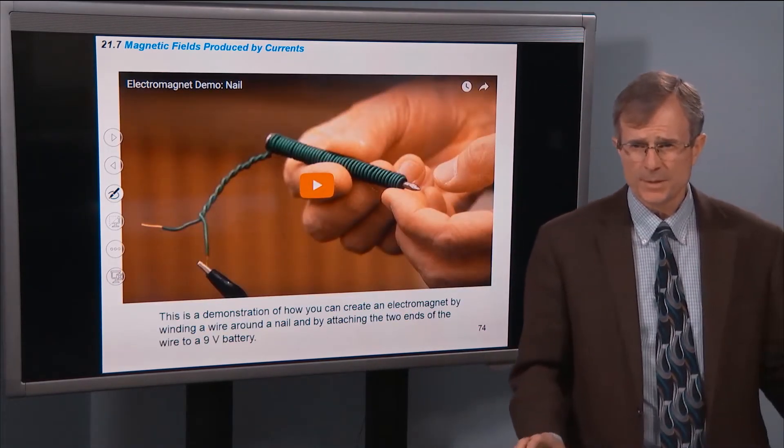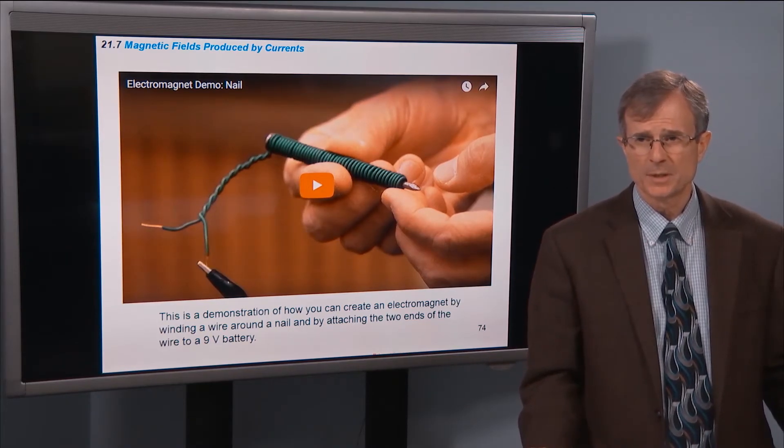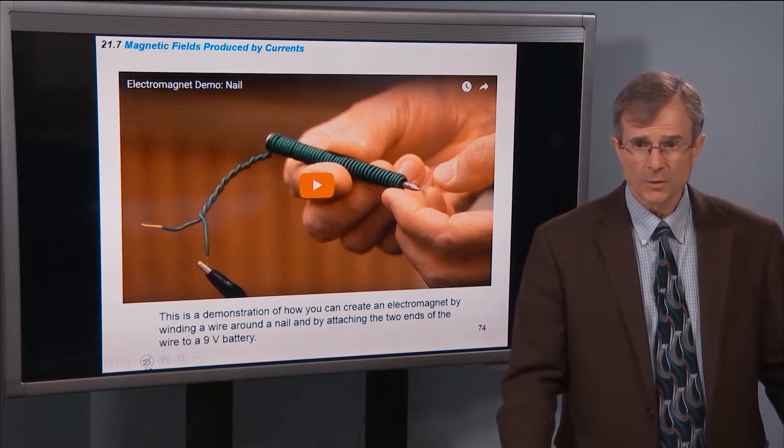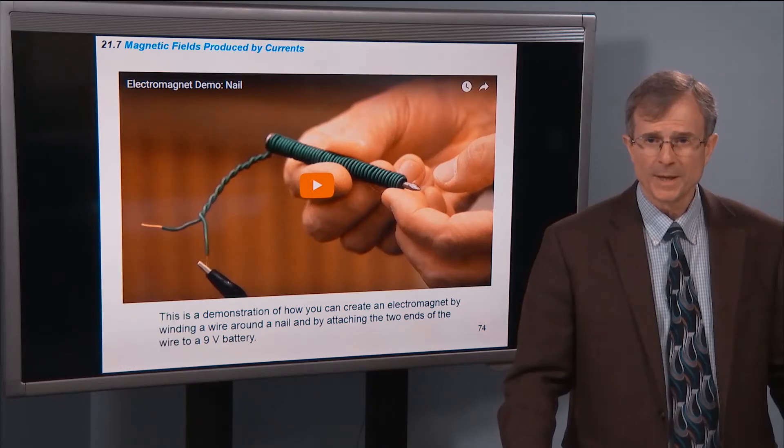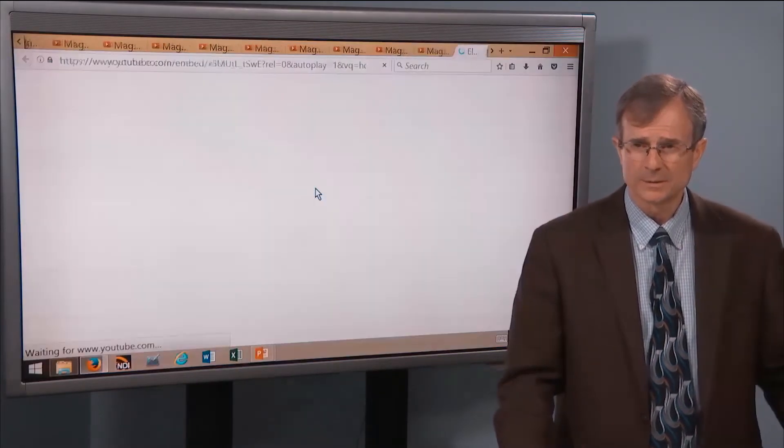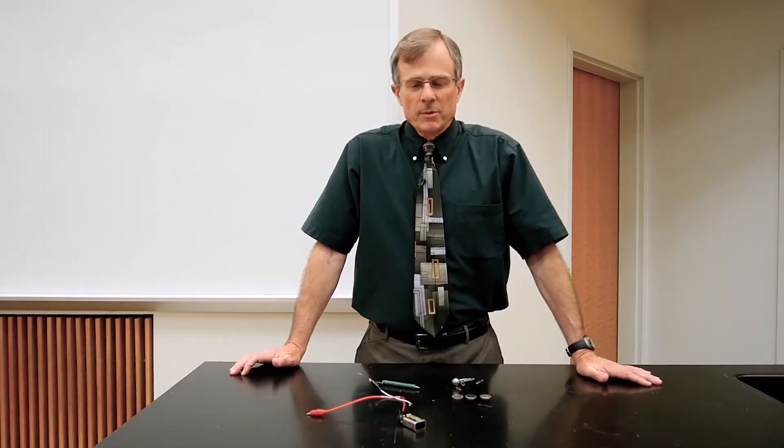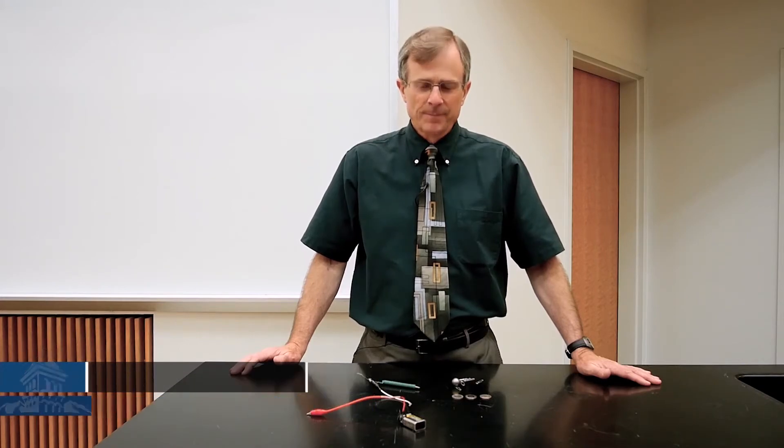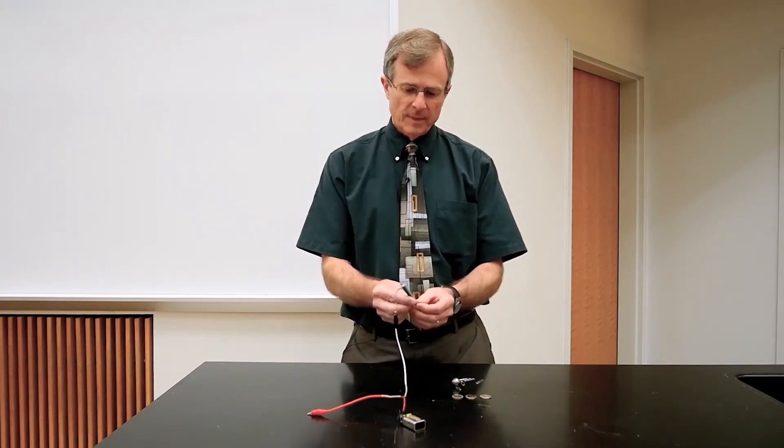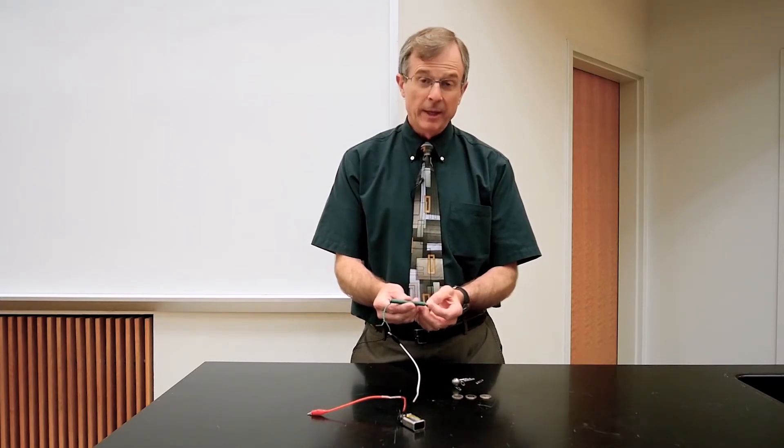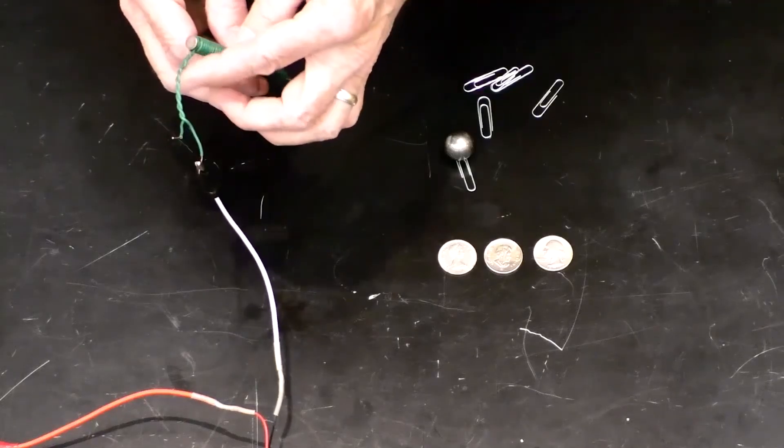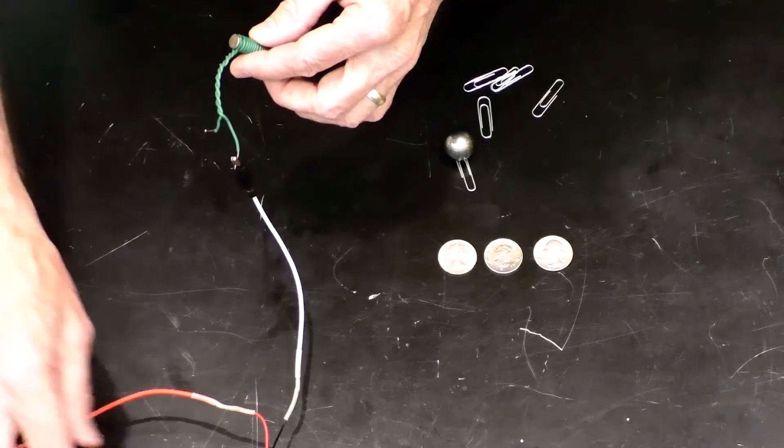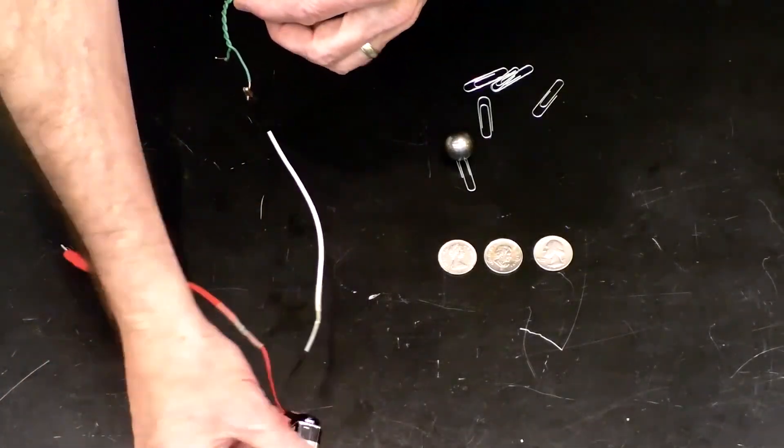Okay. This is a demonstration that we hinted at in the earlier demonstration. This is a solenoid. And it's made out of, it's a definite redneck demonstration. The nail and some wire. This is a demonstration of how you can create a magnetic field by winding a wire around a nail. This is just a standard nail that you'd use in construction. And then attaching the two ends of the wire to a nine-volt battery.